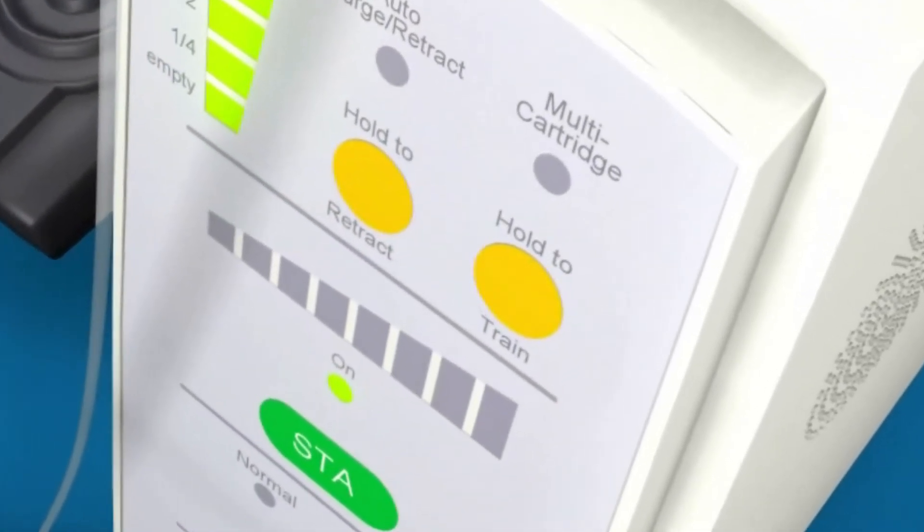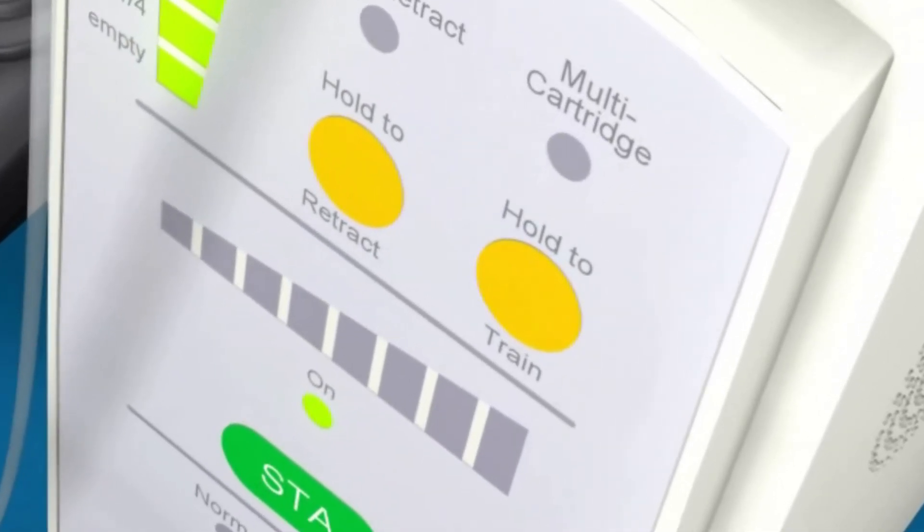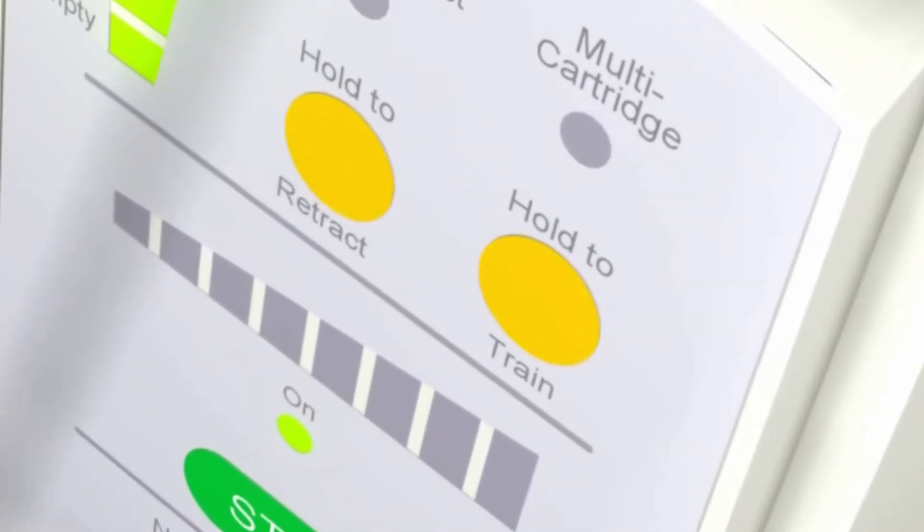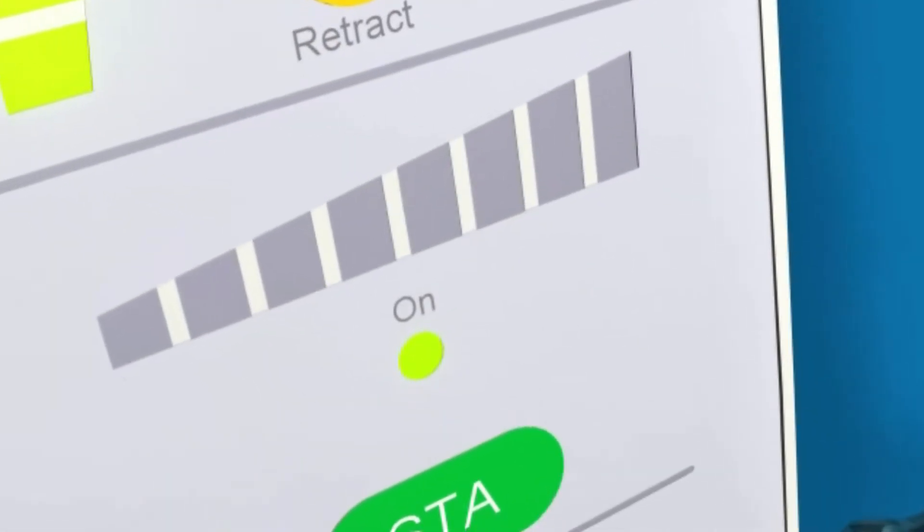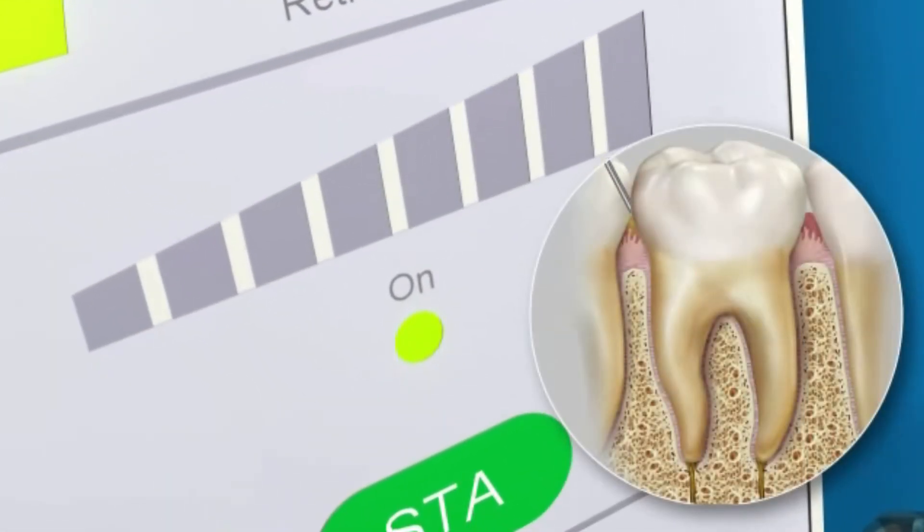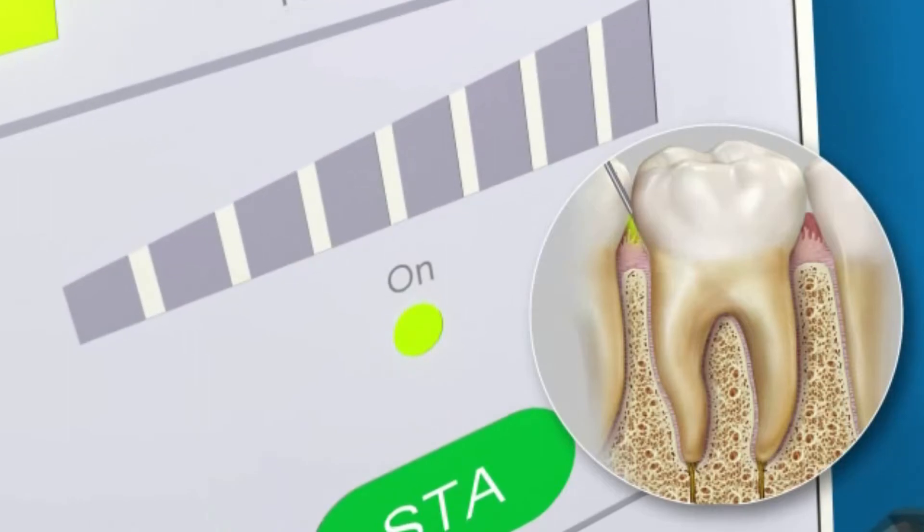This particular C-CLAD system incorporates an additional innovative development called dynamic pressure sensing technology, or DPS. This enables the practitioner to be guided and identify specific anatomical injection sites, such as identifying the PDL tissues when performing an intraligamentary or PDL injection.